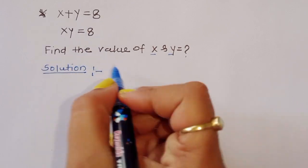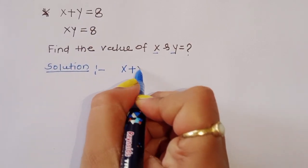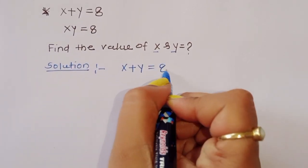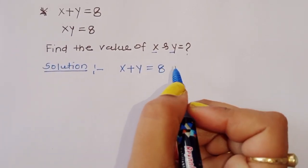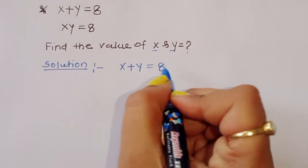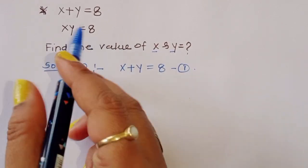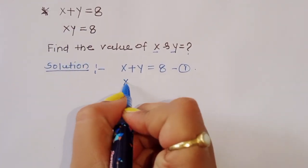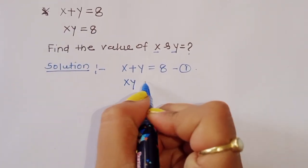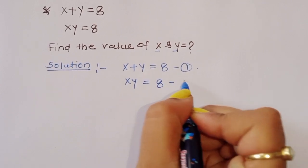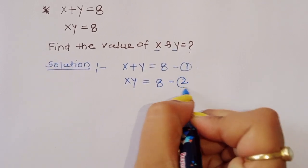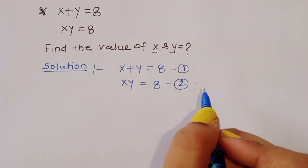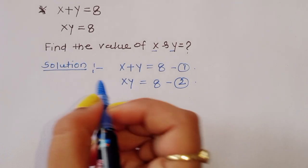What is given: x plus y is equal to 8 — this is equation 1. And x times y is equal to 8 — this is equation 2.